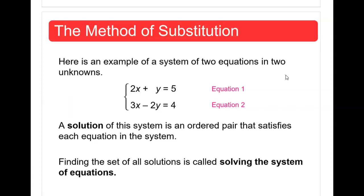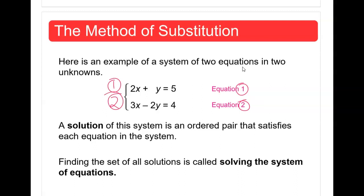Systems are something you've covered since algebra 1 or algebra 2, so this is just a refresher. For the method of substitution, here is an example of a system of two equations and two unknowns. We have equation number one and equation number two. Our unknown variables are x and y — we need to find a value of y and a value of x that make both equations true.